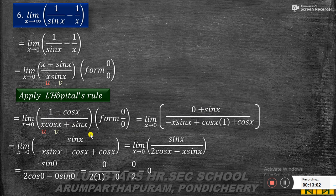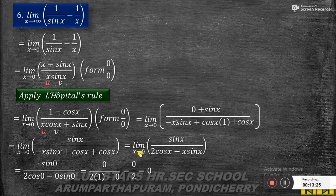Applying L'Hôpital's rule a second time: differentiating the numerator (1 minus cos x) gives sin x. Differentiating the denominator (x·cos x plus sin x) using product rule gives minus x·sin x plus cos x plus cos x = 2cos x minus x·sin x. So we get limit x tends to 0 of sin x by (2cos x minus x·sin x). Substituting x equal to 0: sin 0 = 0, 2·cos 0 = 2, so the answer is 0 by 2 = 0.